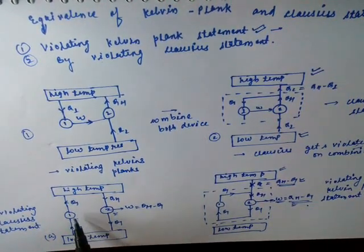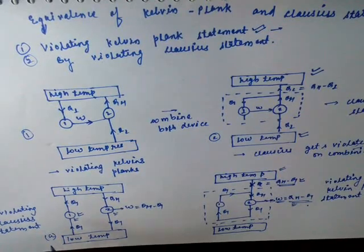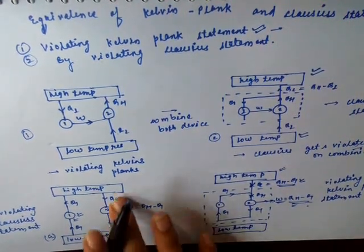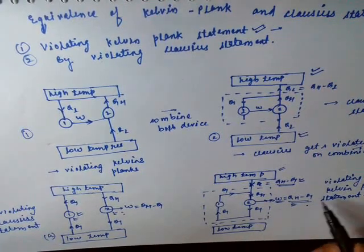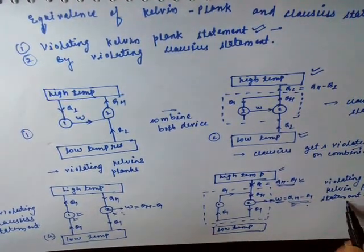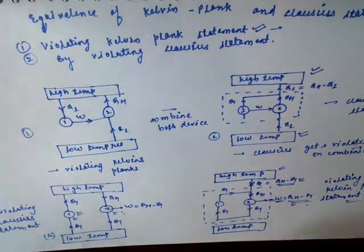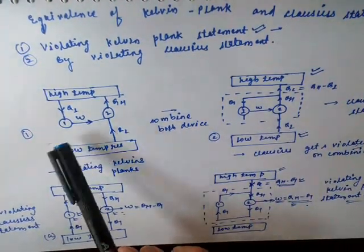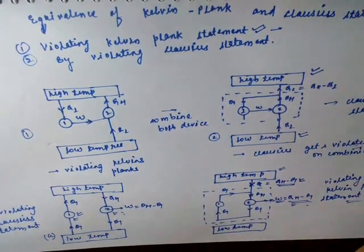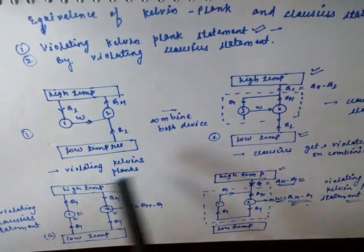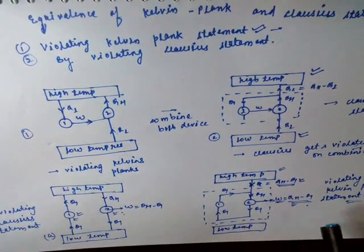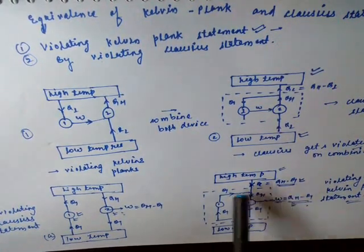What we have done here is: we violated the Clausius statement in Device 1 and kept the Kelvin-Planck statement valid, but if we combine both devices we found that the Kelvin-Planck statement also gets violated. In the second case we violated the Clausius statement and found that the Kelvin-Planck statement gets violated when combining the whole device.